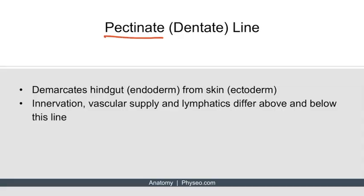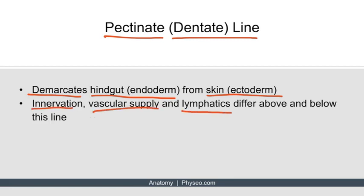The pectinate, or dentate line, demarcates the hindgut — which is endoderm — from the skin, which is ectoderm. This line is very important because the innervation, vascular supply, and lymphatics differ above and below the line.